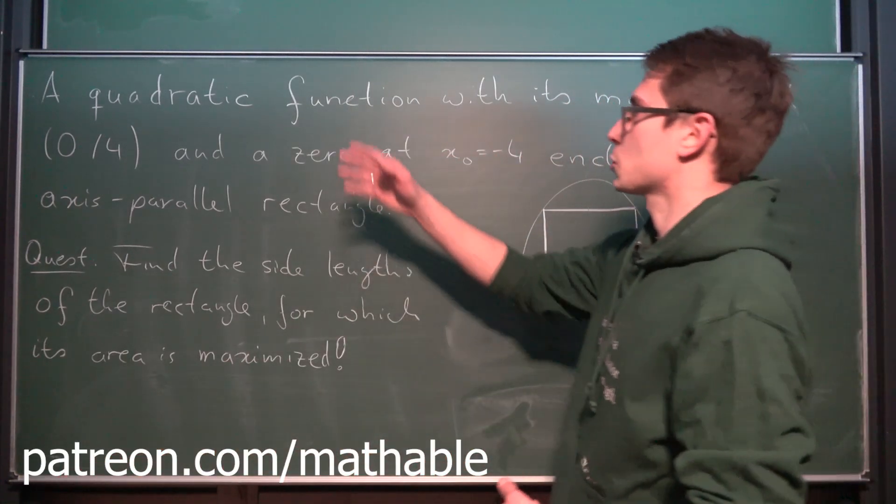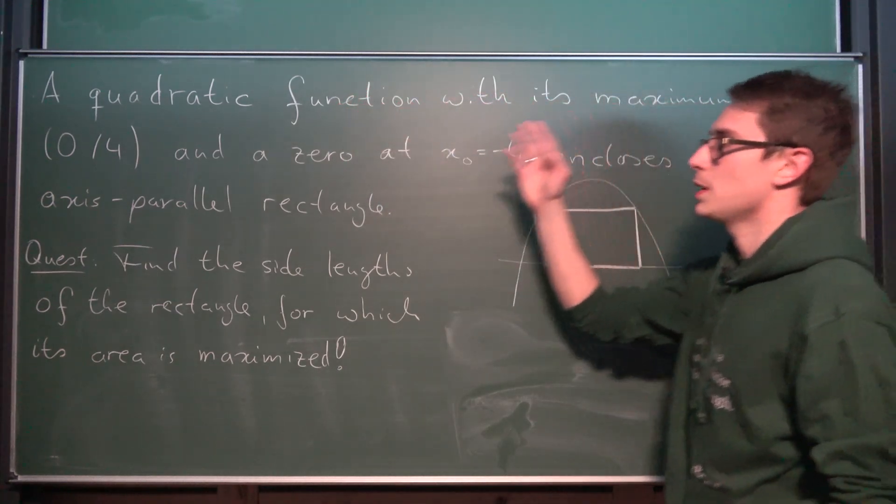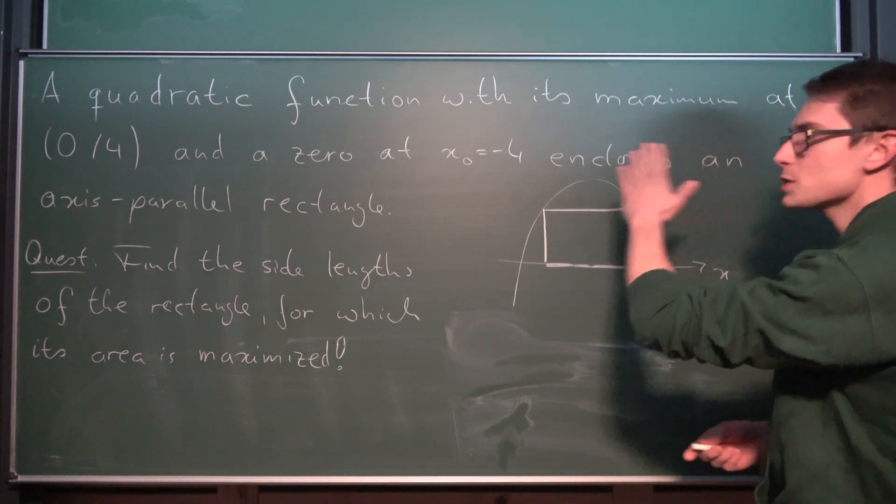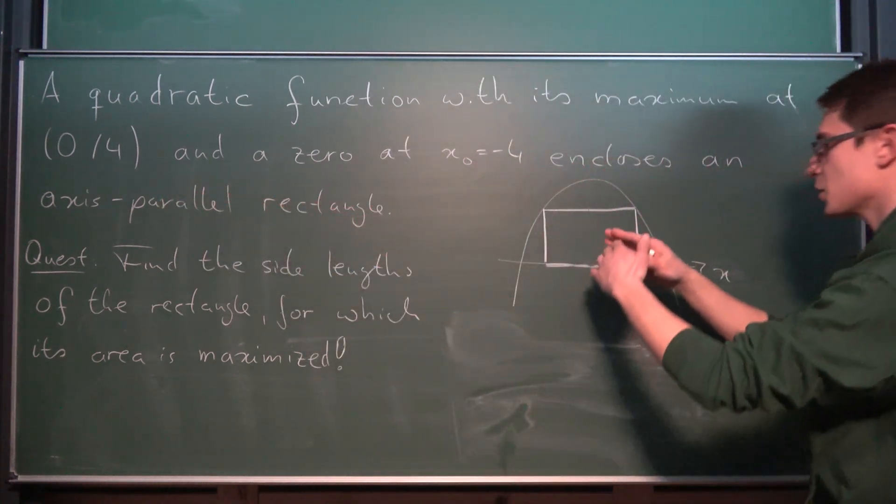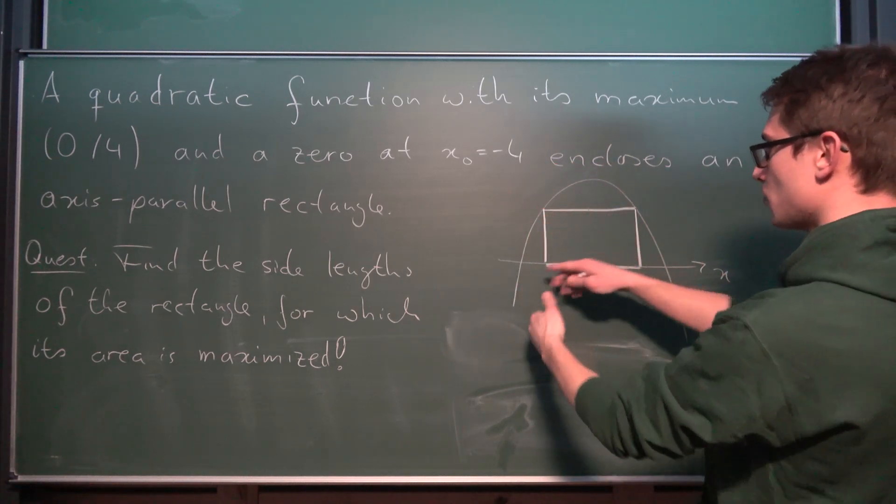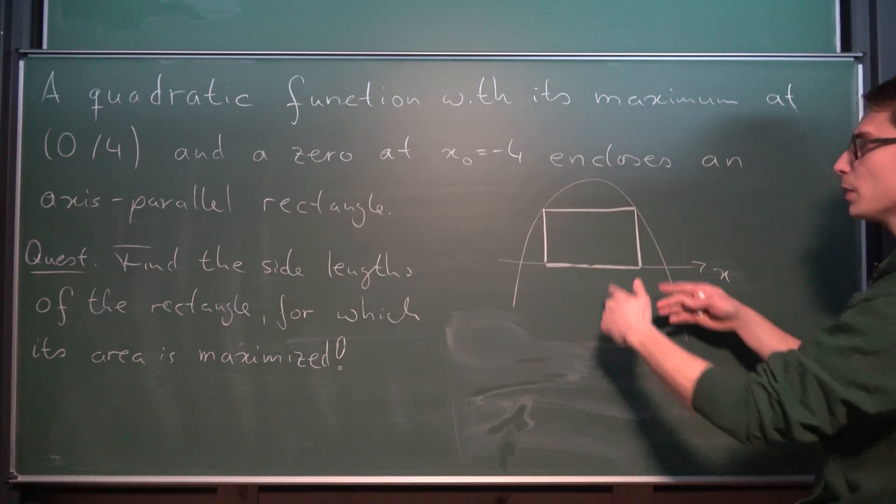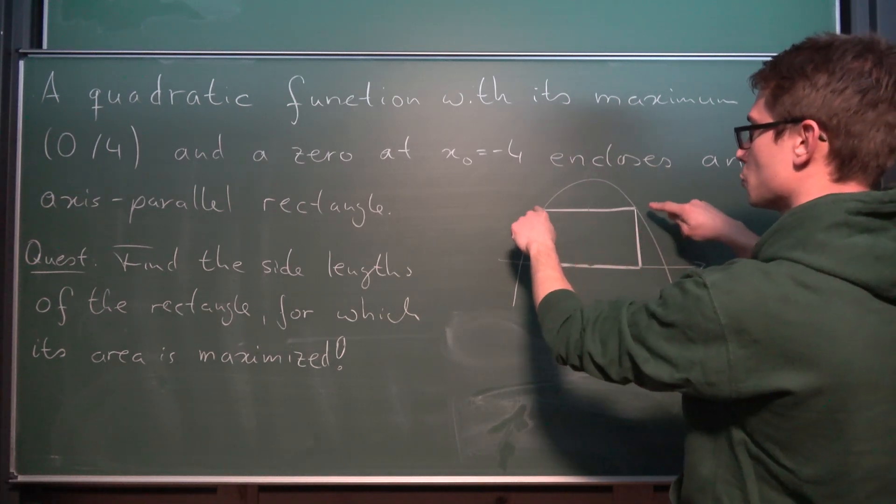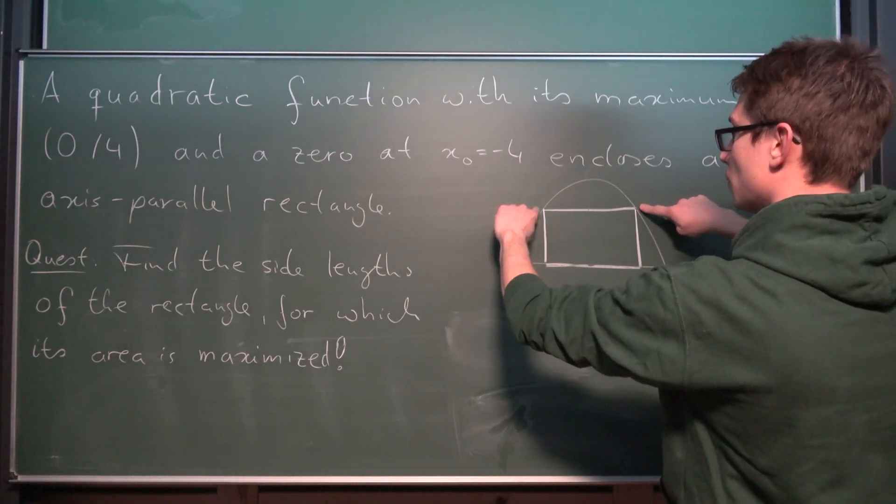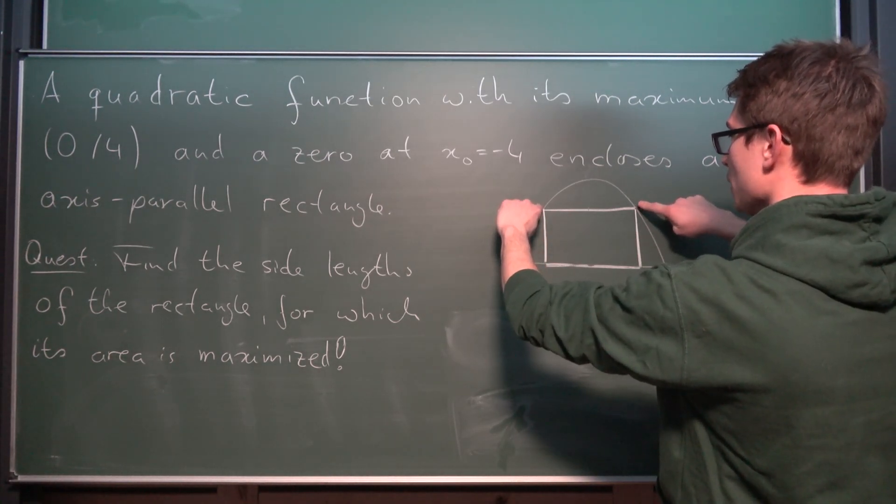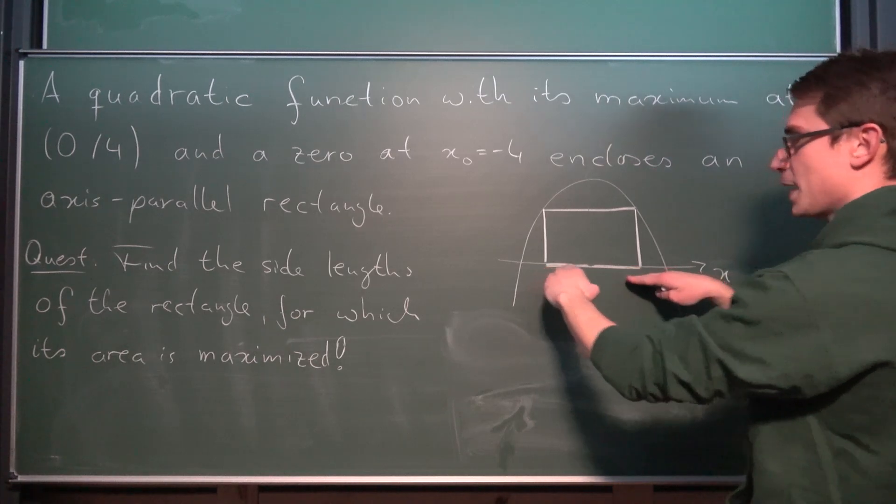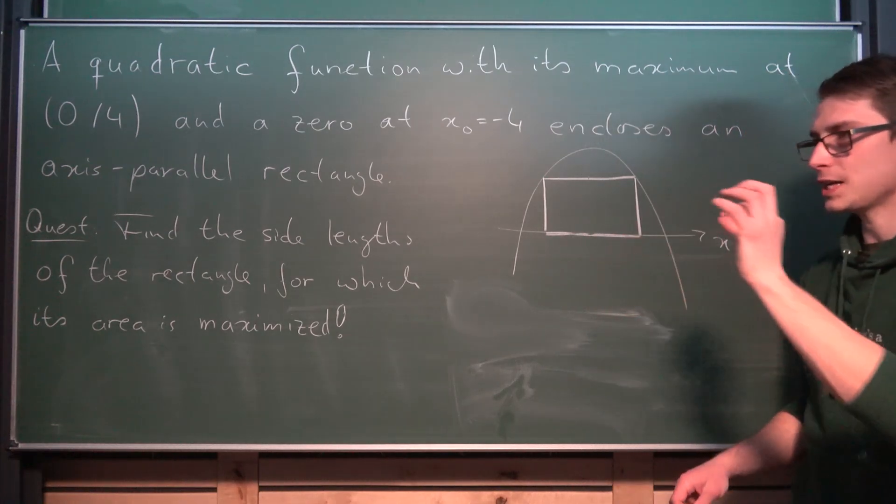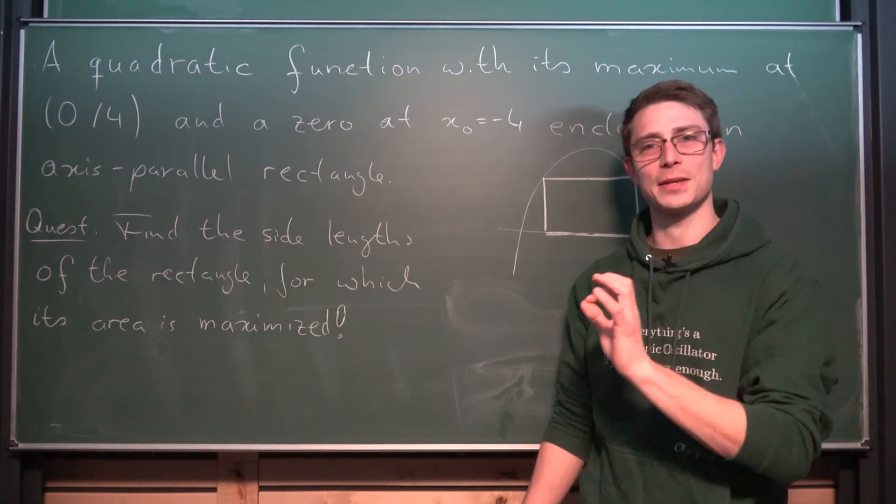Now what's the question exactly? We have that a quadratic function with its maximum at (0,4) and a zero at x₀ being equal to negative 4 encloses an axis parallel rectangle. Just like in this sketch. Right here, we have our quadratic function. That's a parabola. It has a maximum and it encloses a rectangle. The rectangle is going to touch just like a circumference our parabola exactly at the upper corners and also the rectangle is bounded by the x-axis. Now here's our question.